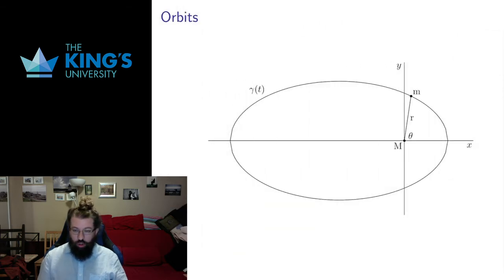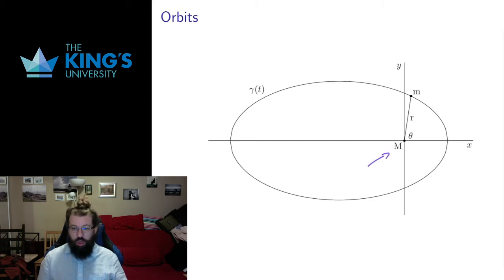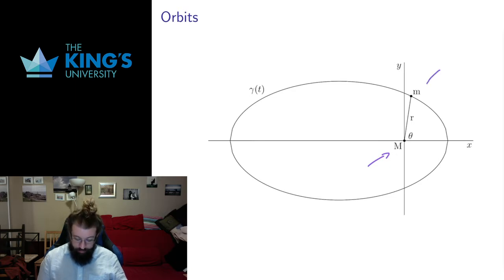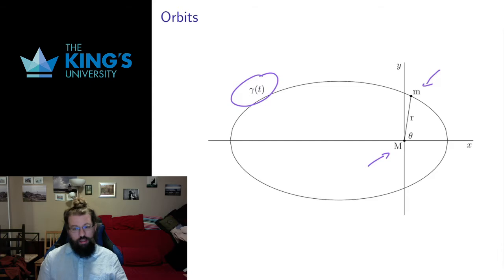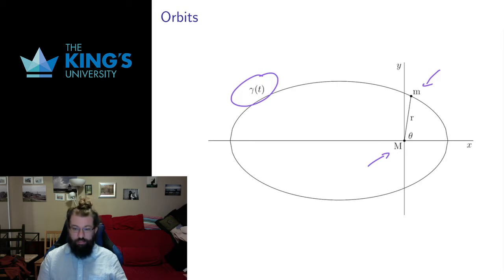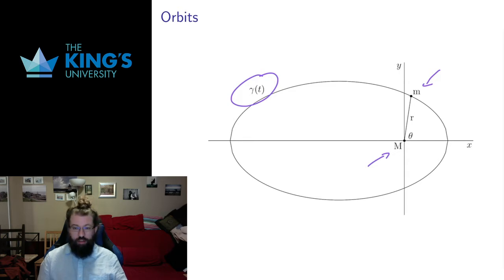Let's talk about orbits. The setup is going to be: we have some large object with mass capital M, which is much much larger than the mass of its satellite. We fix that at the origin, and the position of the satellite with mass little m is determined by a parametric curve given in polar coordinates. Gamma is going to be some curve depending on time, determined by its radius r and its angle theta.